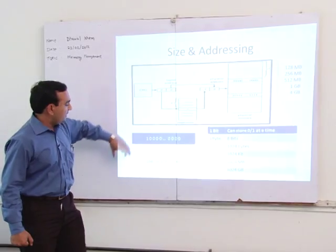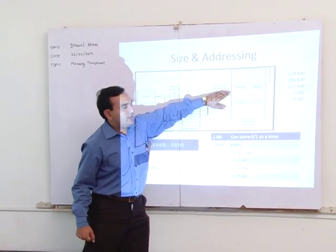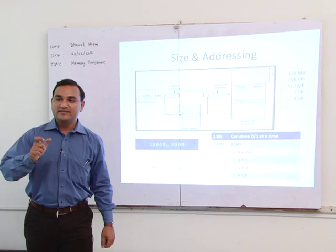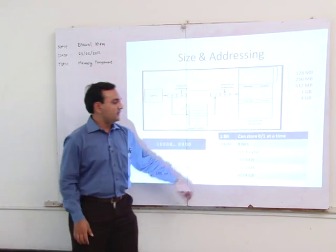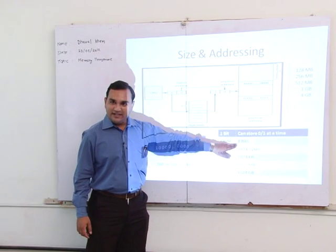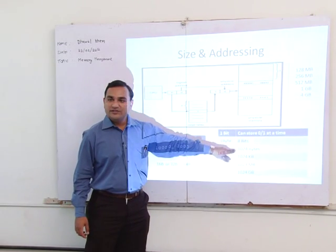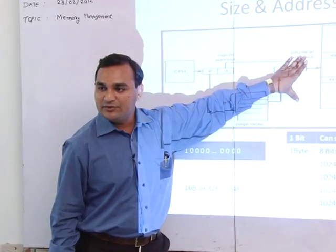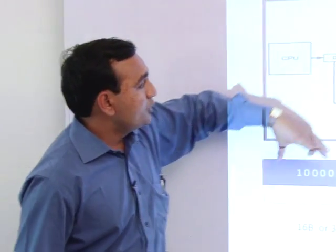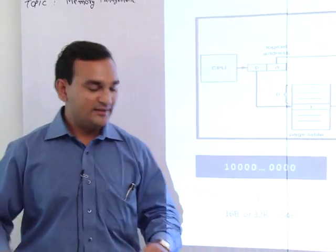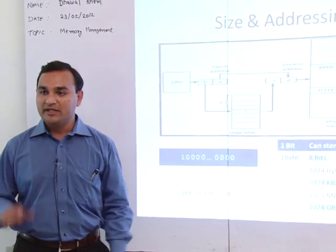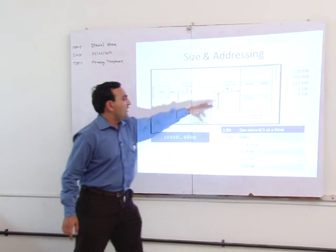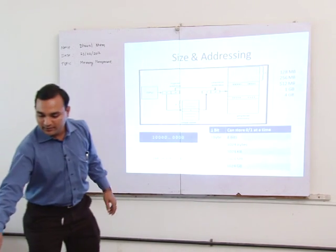Regarding addressing: each memory location has an address value and contains data. One bit stores either 0 or 1 — 0 represents low voltage and 1 represents 5 volts. One byte contains 8 bits. 1 KB is 1024 bytes, and similarly we have megabytes, gigabytes, and terabytes — allowing us to calculate memory size. The address space depends on bus width: either 16-bit, 32-bit, or 64-bit processor, which defines the total address space.